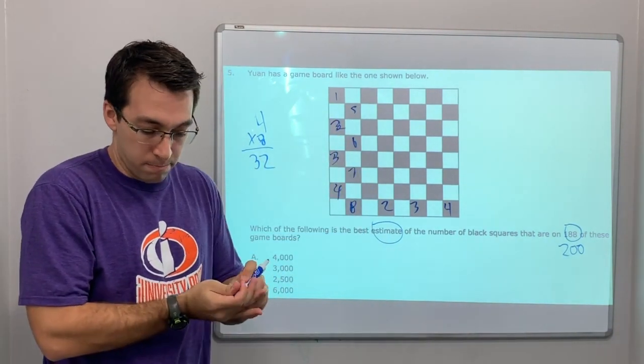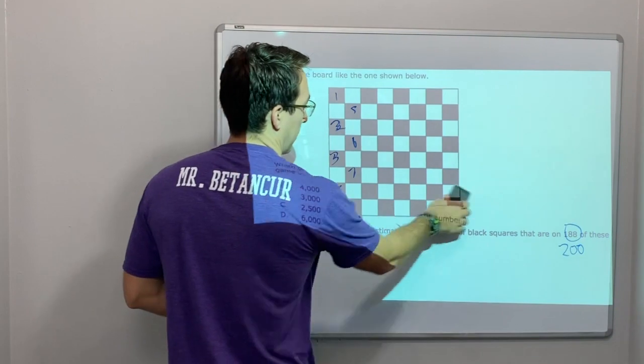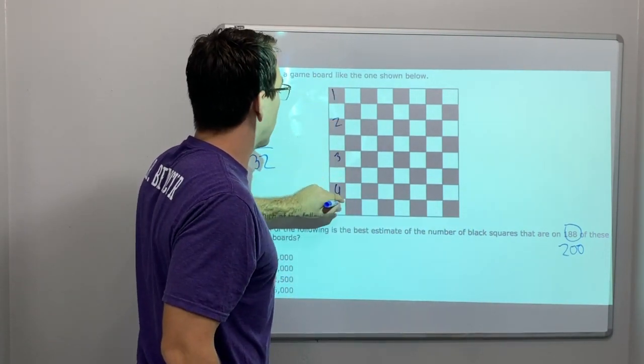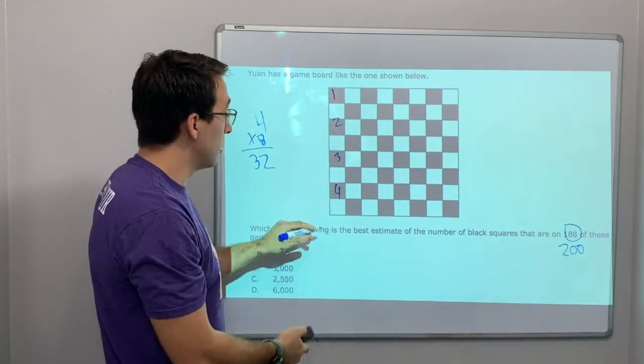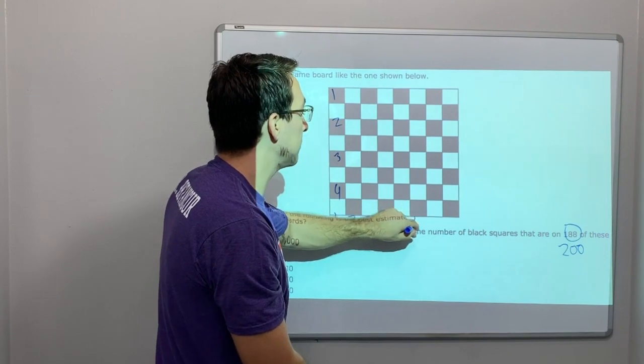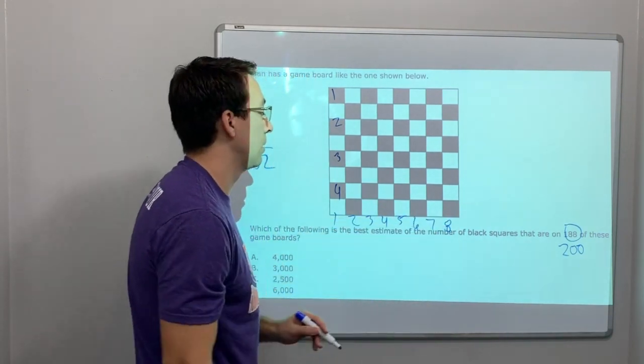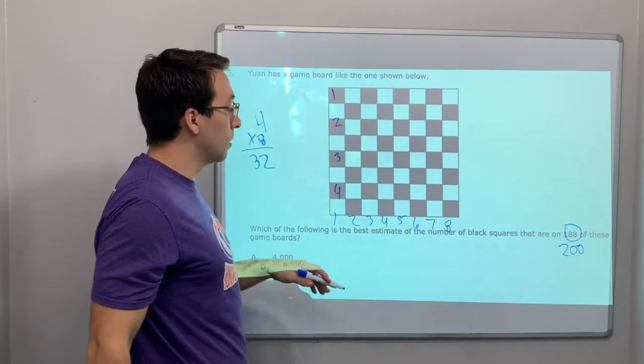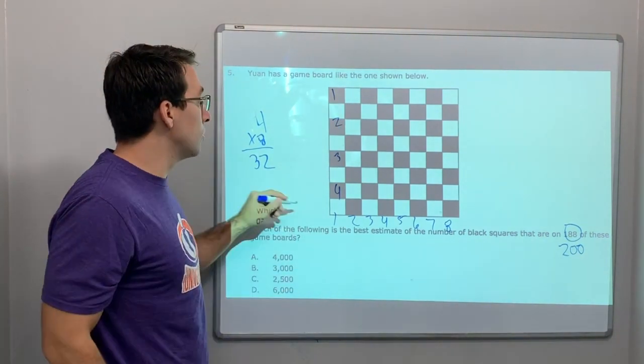Because look, there are like, there's eight rows, right? 1, 2, 3, 4 per column. 1, 2, 3, 4, 5, 6, 7, 8. That is the correct problem. 8 times 4, not 4 times 4. So there's 32 black squares.